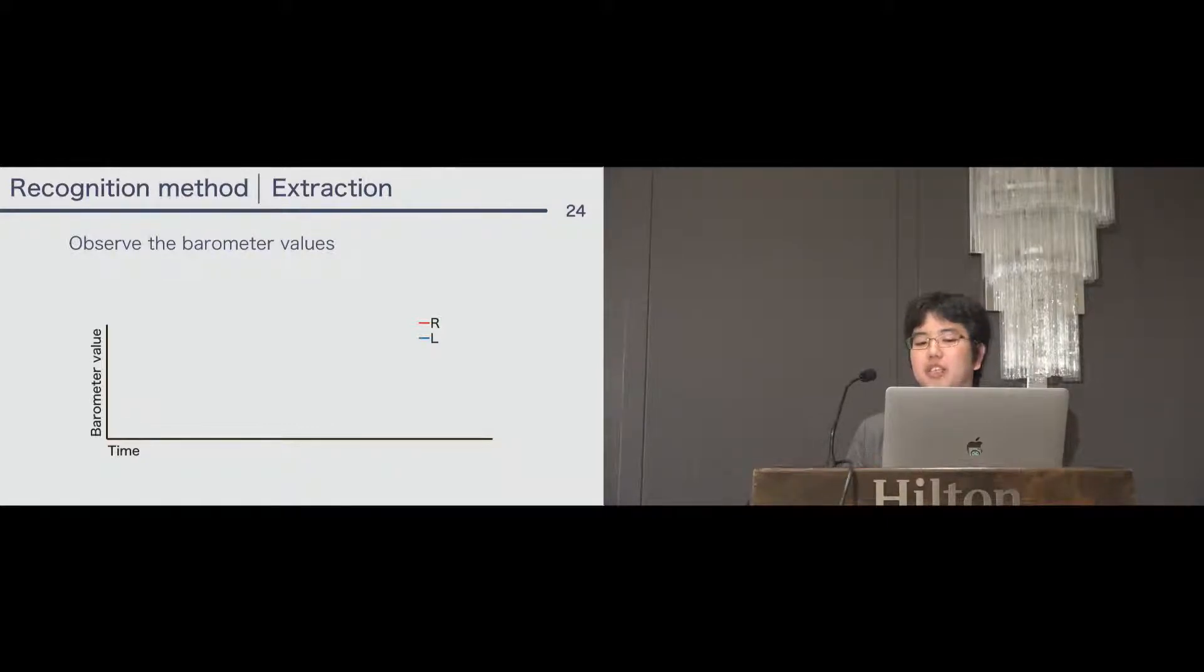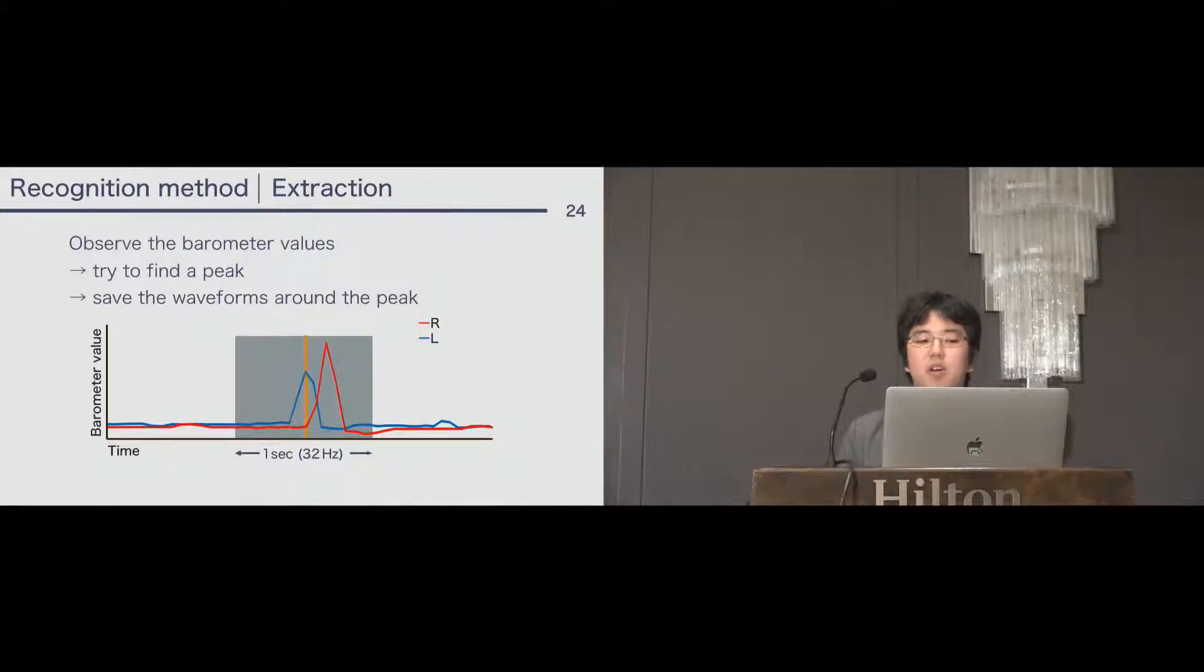We have some steps to extract the characteristic waveforms from the streams of barometer values. First, observe the barometer values and try to find a peak. In this example, it looks like the right barometer values' peak is larger than left barometer values' peak. But we define the peak as the first peak of the stream in current design. And save the waveforms from around the peak. The window size of the waveforms is one second. That is 32 barometer values per ear.